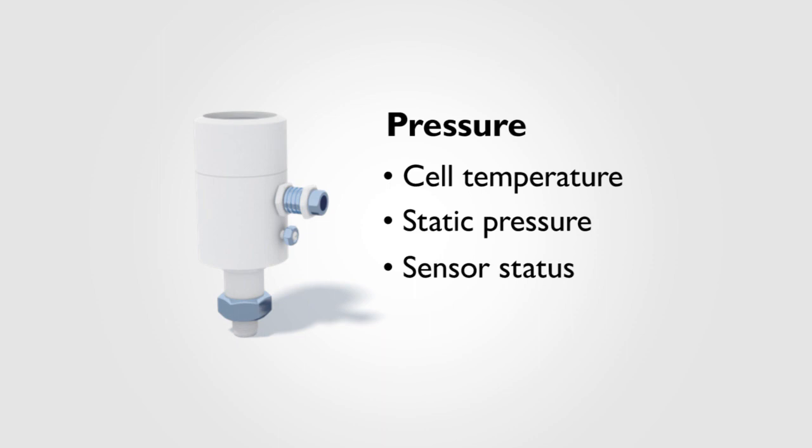For instance, pressure transmitters can provide the process pressure, absolute or gauge, and the ambient temperature. Differential pressure, static pressure, and ambient temperature are all provided by a differential pressure transmitter.